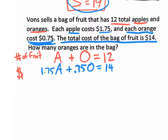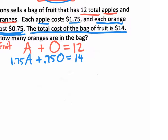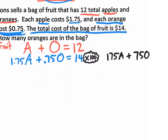There's our system. A lot of people freak out because of the decimals. To get rid of decimals, multiply everything by 100. The decimal moves two spaces: 1.75 becomes 175, 0.75 becomes 75, and 14 becomes 1,400. So the modified bottom equation is: 175A + 75O = 1,400.